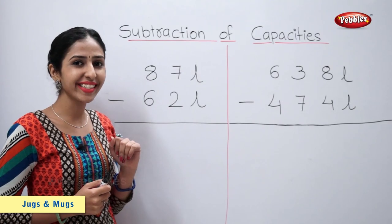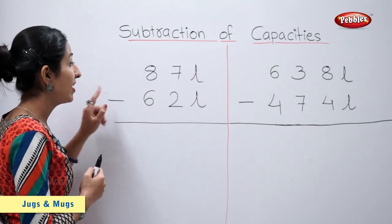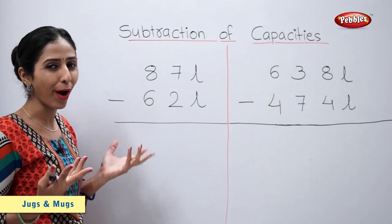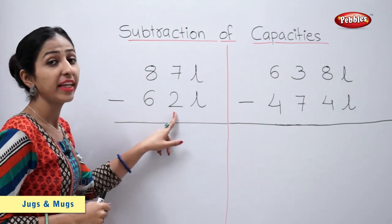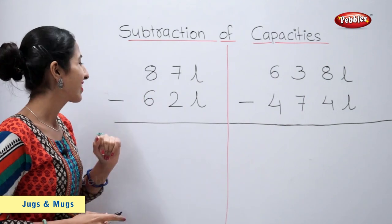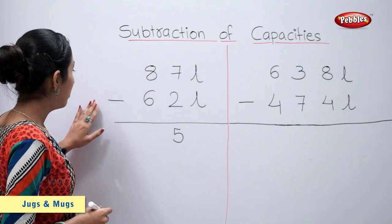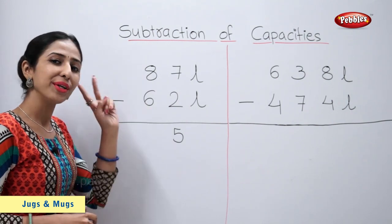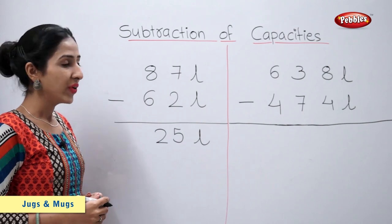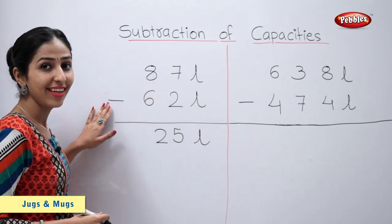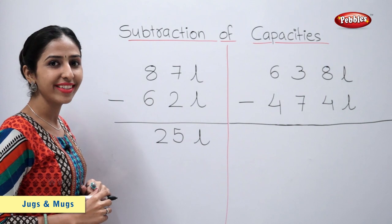Let's solve this example. 87 litres minus 62 litres is equal to how much? 7 minus 2 is equal to 5. 8 minus 6 is equal to 2. So, 87 litres minus 62 litres is equal to 25 litres.